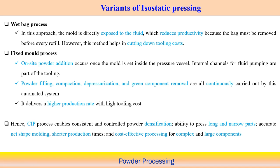There are variants of isostatic pressing. One is the wet bag process, where the mould is directly exposed to the fluid instead of using a mechanical punch. This reduces productivity because the bag must be removed before every refill; however, this method helps cut down tooling cost and eliminates intermediate mechanical tools to press the powder particles.